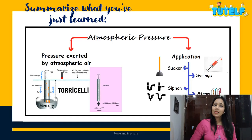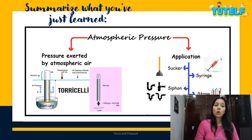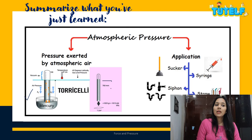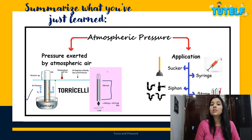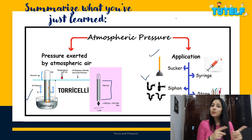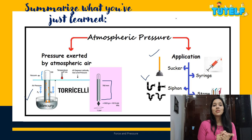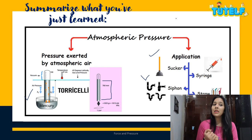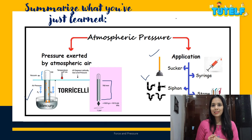I hope this concept is clear. Let's summarize: atmospheric pressure is the pressure exerted by the atmospheric air. In the Torricelli experiment, mercury in the beaker rises 760 mm due to air pressure, giving us the atmospheric pressure of 101.3 kPa. The applications of atmospheric pressure are the sucker, siphon, syringe, and straw. If you have any doubts, please write in the comments section and check out the other videos. Thank you so much for being a part of Tutelv. You can see all our science and maths videos from grade 1 to 10. Thank you, stay safe, stay healthy, bye.